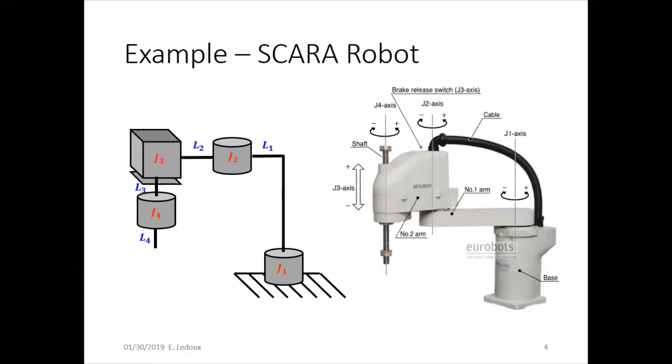For example, looking at this SCARA robot, we can see it has four joints. So we will need five coordinate frames. One for the ground and then one for each joint. So joint one here is vertical. We can see this is a revolute joint. Joints two and four are also revolute. You can see their axes. And then joint three is prismatic. So this pushes up and down.